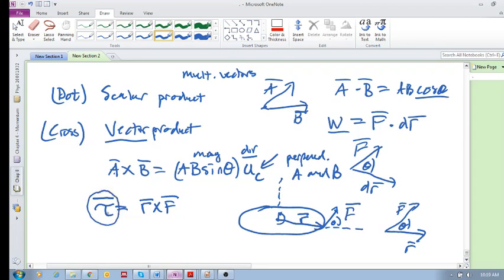Because remember, torque is a vector - it has both a magnitude and a direction. The magnitude is going to be r (the magnitude of r) times the magnitude of the force times the sine of the angle between them. That is the magnitude.